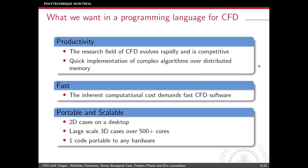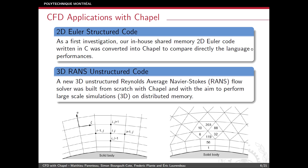To explore the use of Chapel in CFD, we decided to work in two parts. The first part involved taking an already existing C code and converting it to Chapel directly. The objective was to see how Chapel compares to C for a very simple CFD code — in this case, a 2D Euler structured code.